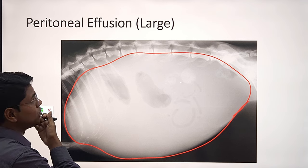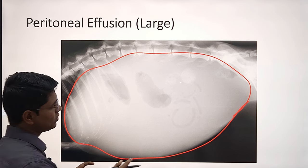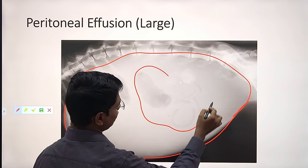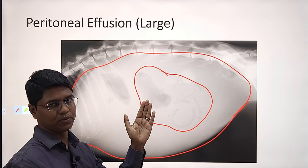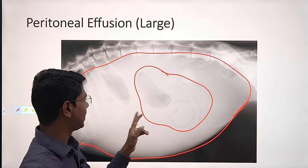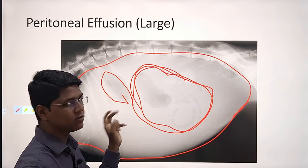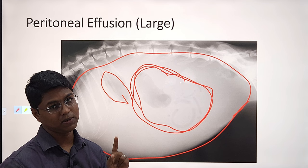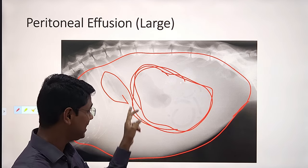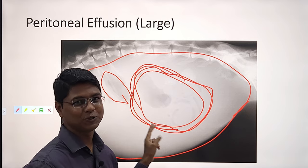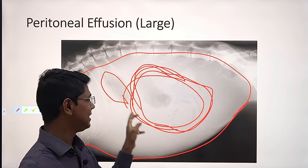When there is large amount of fluid, the intestinal loops containing gas will float up and will usually be located centrally. The stomach is fixed by lesser and greater momentum, so it will not come to the central position. But especially the jejunum — those intestines containing gas will float up and will be in a central position.